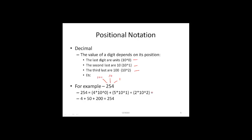So what is the value of 254 computed using positional notation? We take our digit value 4 and multiply it by its positional weight 10 to the 0, plus 5 times its positional weight 10 to the 1, plus 2 times its positional weight 10 to the 2. This equals 4 plus 50 plus 200 — no surprise, 254.